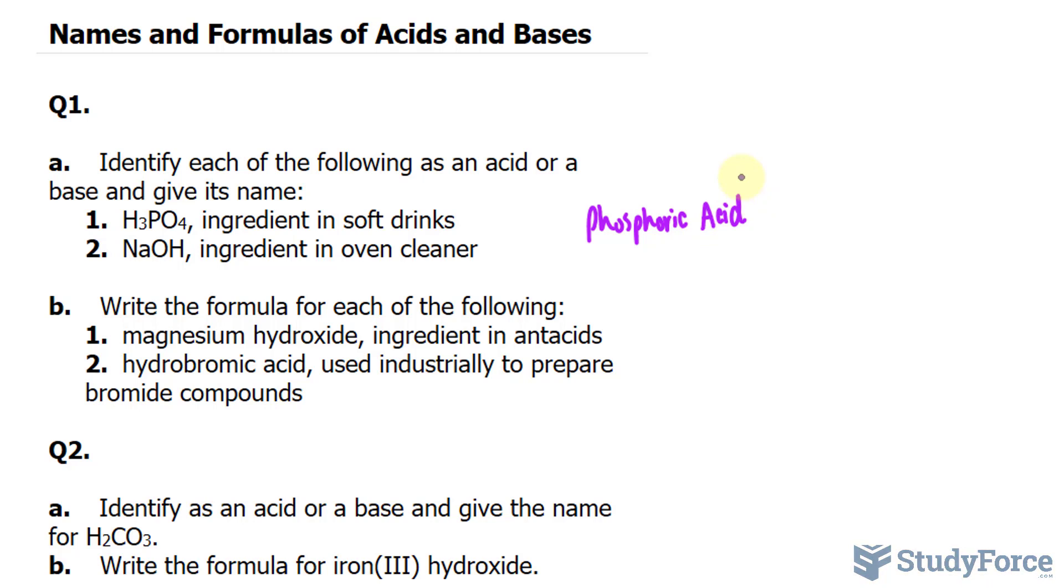In question number 2, NaOH, the ingredient in oven cleaner. We have sodium and OH, a polyatomic ion known as hydroxide. The name of this compound is sodium hydroxide, and it's a base. Hydroxide has basic properties. Anytime you have OH attached to a metal, it's going to be basic.